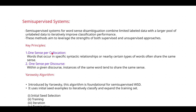Now let's discuss the key principles of semi-supervised systems. The first principle is 'one sense per collocation.' Collocation means you decide the meaning of a particular ambiguous word based on its surrounding words. In a sentence, if you come across certain surrounding words, the word causing disambiguation will share the same meaning throughout that sentence.